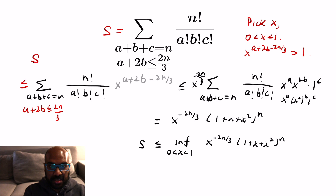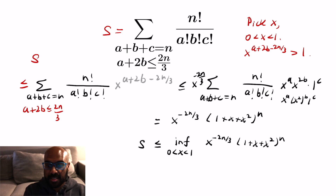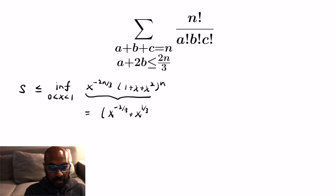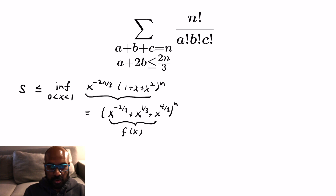We've changed this upper bound into a calculus problem where we're trying to find the minimum of x to the negative 2n over 3 times the quantity 1 plus x plus x squared all raised to the n. We can rewrite this by pulling x to the negative 2n over 3 into the trinomial, giving x to the negative 2/3 plus x to the 1/3 plus x to the 4/3, all raised to the n. We'll let this expression inside the exponent be f of x and use calculus to get a bound.